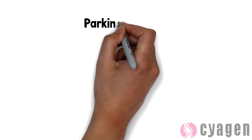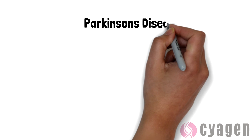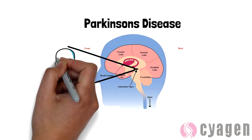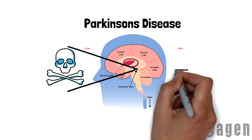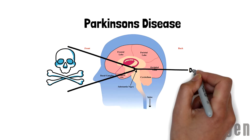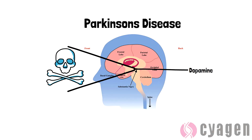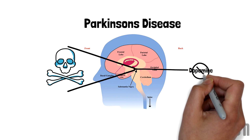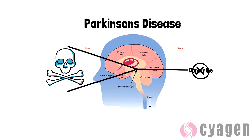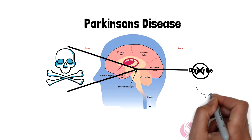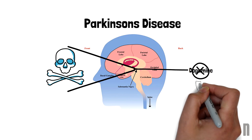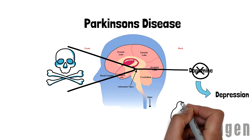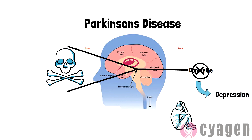Parkinson's disease is caused by a loss of nerve cells in the part of the brain called the substantia nigra. Nerve cells in this part of the brain are responsible for producing a chemical called dopamine. Dopamine is the chemical that lets us feel pleasure, and people with Parkinson's disease also suffer from depression and anxiety as these nerves die.